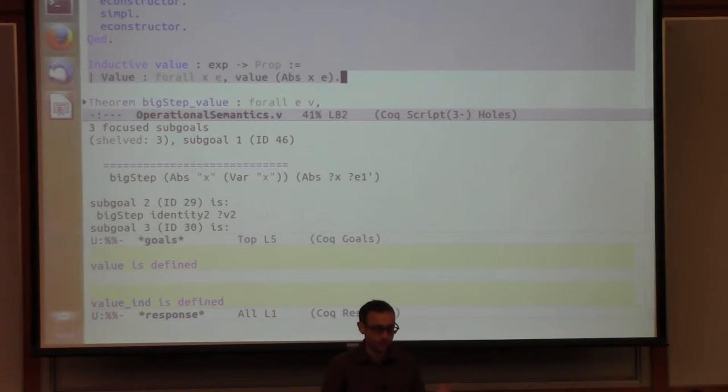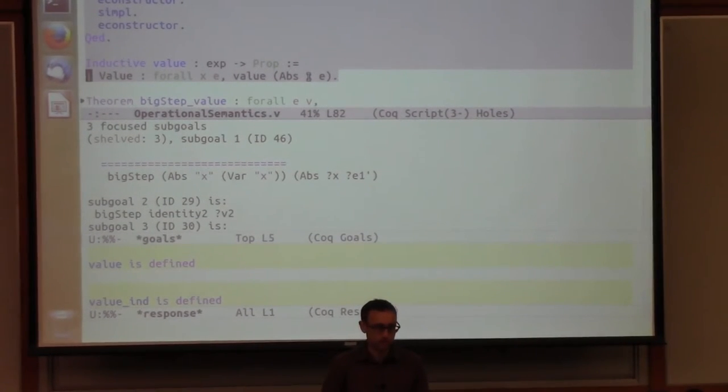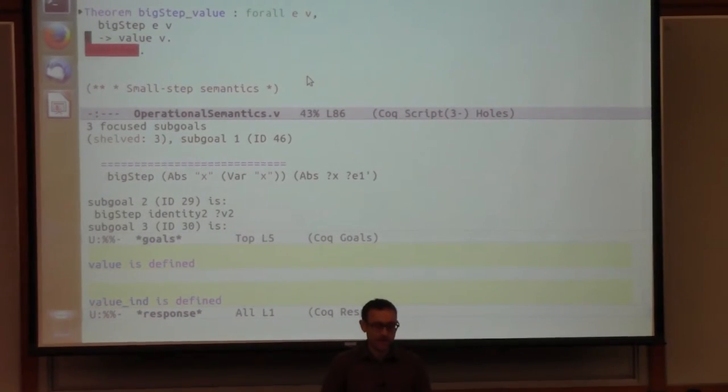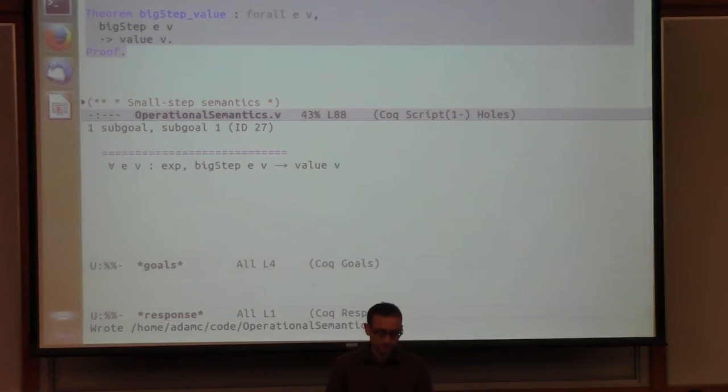So then here's the value relation that I wrote over there as the last rule. It just says a value is exactly any lambda abstraction. Actually, the formal definition of a value requires that this is a closed expression where the expression e doesn't mention freely any other variables besides x. I'm going to leave out that constraint here. We can still prove enough interesting things without worrying about it. But it is helpful to show that whenever any expression steps to some result, that result really is a value. So just as a kind of sanity check on this definition, let's try to establish that fact. Any suggestions on a good way to prove this?